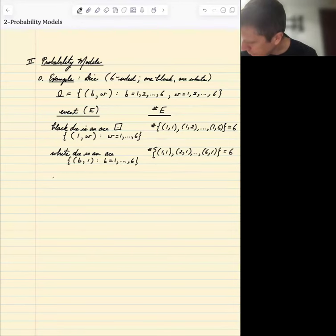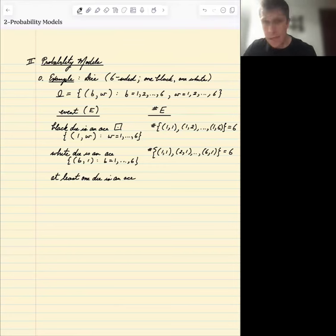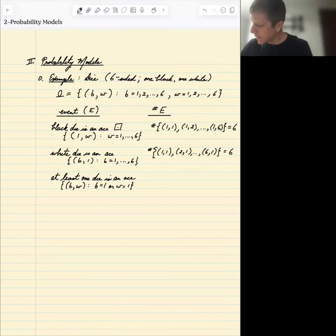Now let's consider the event that at least one die is an ace. So now this is a little different. Right. So this is the event BW where either B equals one or W equals one, possibly both. So how many ways are there for that?